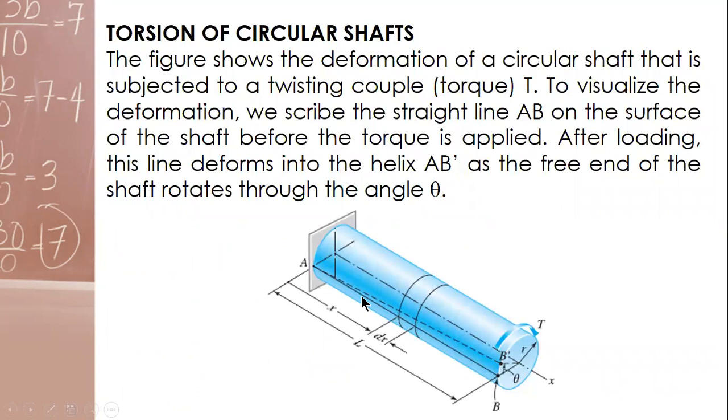So for illustration, the figure shows the deformation of a circular shaft that is subjected to a twisting couple T. To visualize the deformation, we scribe the straight line EB on the surface of the shaft before the torque is applied.